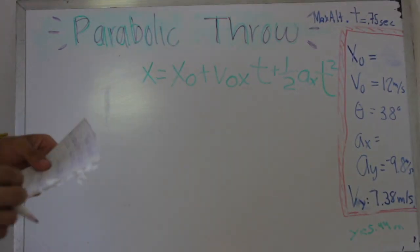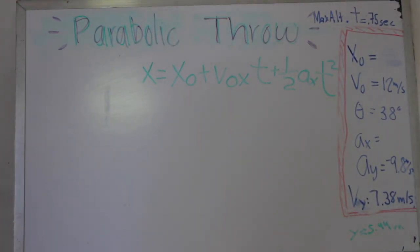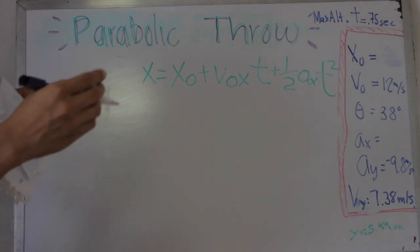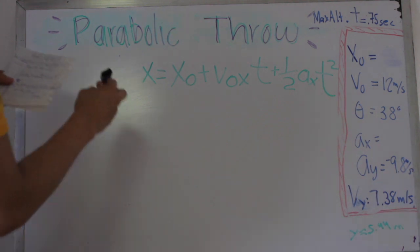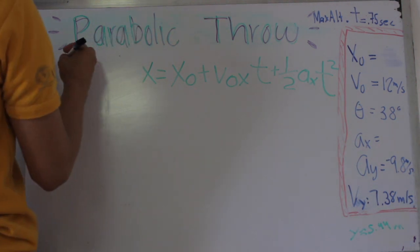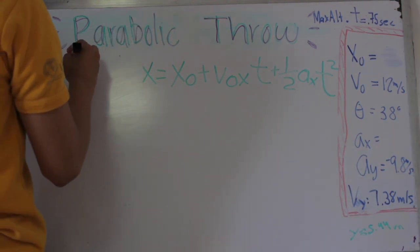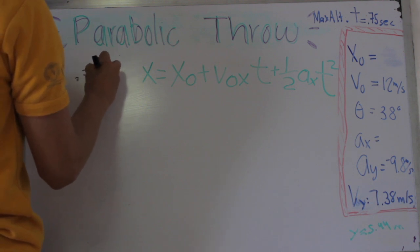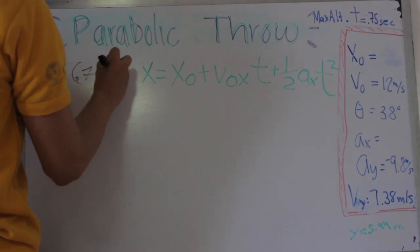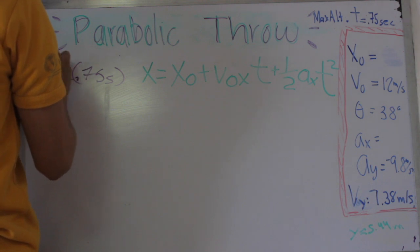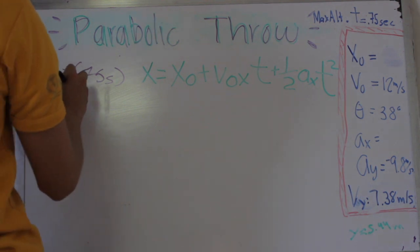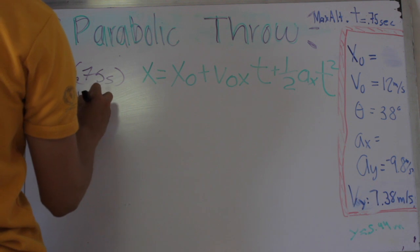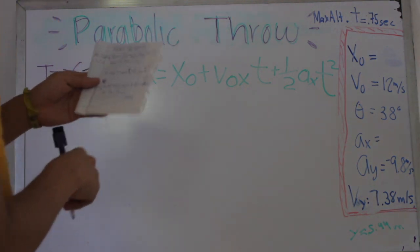Now we need the total time that the ball takes to reach the ground. For parabolic throw, the motion is like a mirror — so the time to reach maximum height, which is 0.75 seconds, is multiplied by 2. The total time is 1.5 seconds.